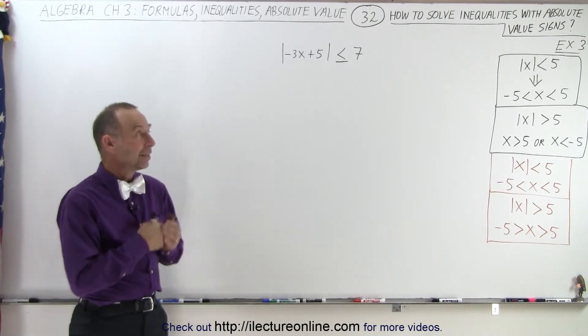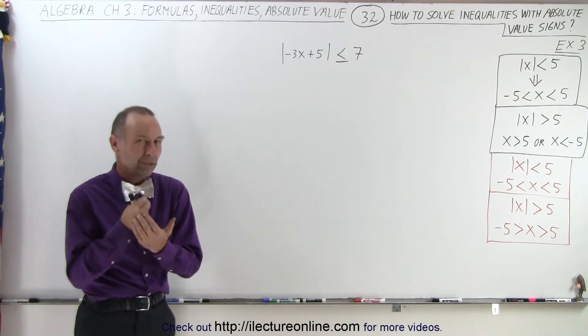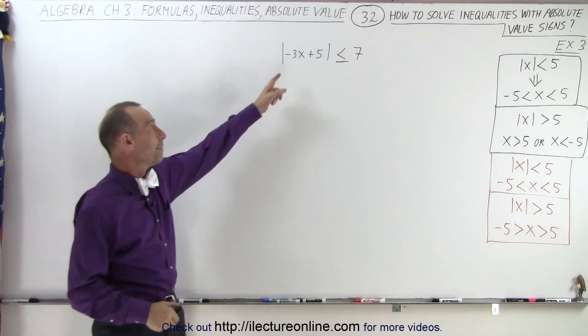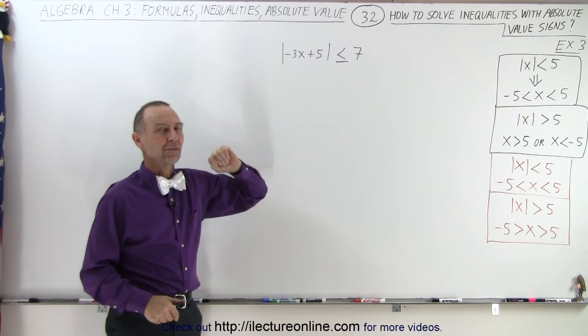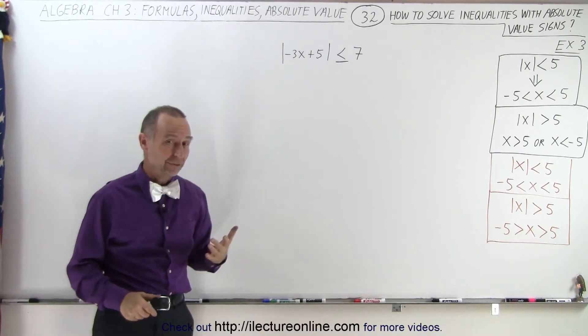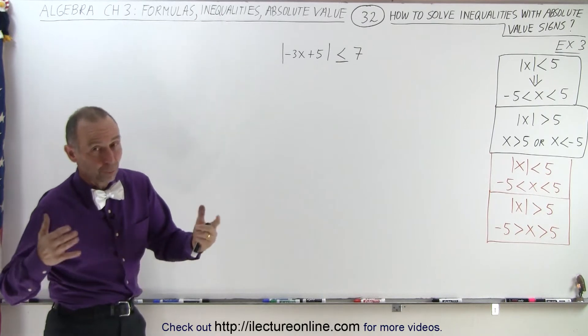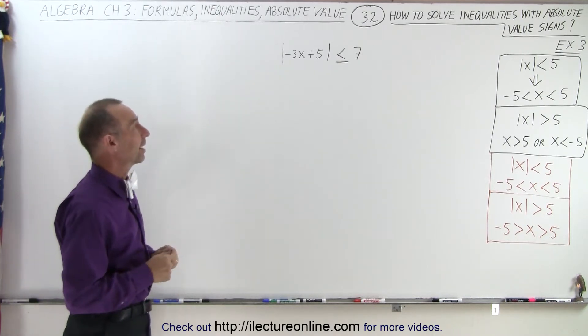Welcome to I Lecture Online. In this example, we'll have one more wrinkle, one more additional thing we need to worry about. Notice we have a minus 3x here, so maybe we're going to have to divide by a negative number and flip the inequality signs. In addition to that, we have to worry about the absolute value signs.